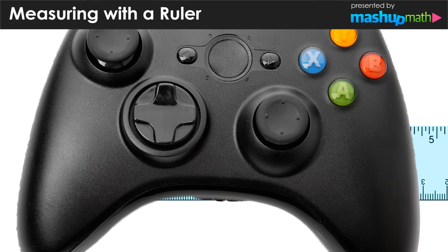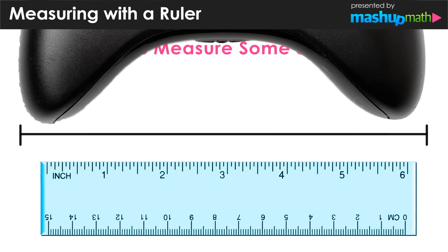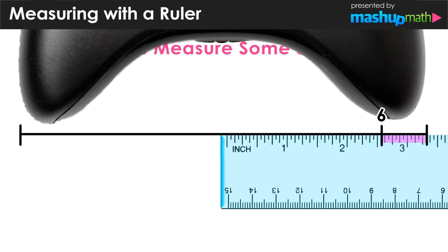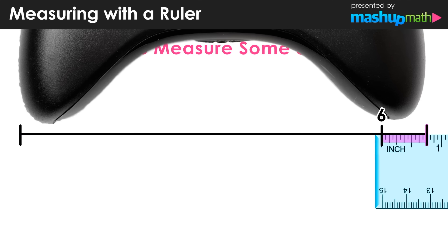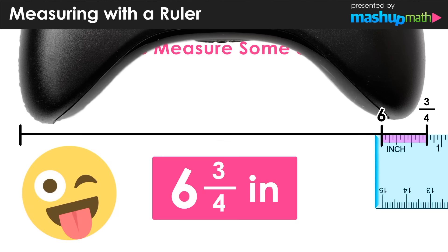Now what about an object like a video game controller? We line our ruler up at the zero inch mark on the left edge and see that this object is longer than six inches. So we measure the first six inches, then slide our ruler over to measure the extra space. This figure extends an extra three quarters of an inch, so the video game controller measures six and three quarters of an inch.